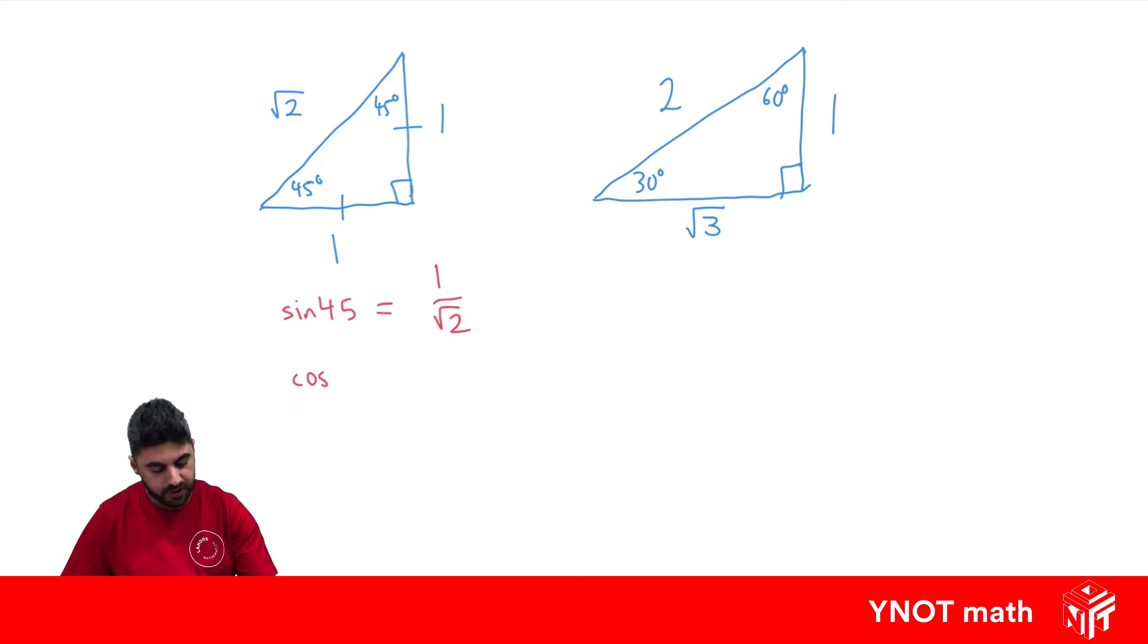What about cos 45? Let's use this angle here. So it's the adjacent over the hypotenuse, which is also 1 over root 2.